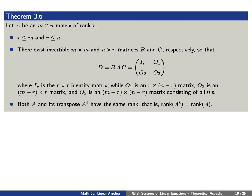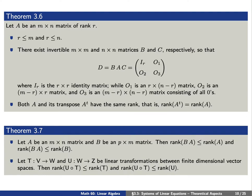Both A and its transpose have the same rank — that is, the rank of A transpose equals the rank of A. If we have two matrices A and B such that the product B times A is defined, then the rank of B times A is less than or equal to the rank of A and less than or equal to the rank of B.